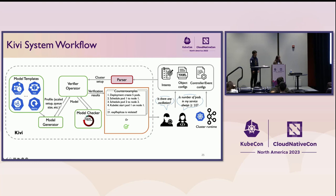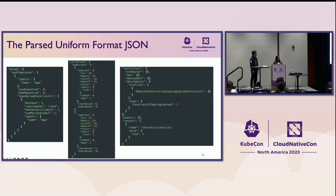Some brief notes about parsers. We parse the configuration into a uniform format — right now we chose JSON, but we can improve it to support YAML. The templates show node types similar to what Kanwuk showed, including controller configurations and intents. We have implemented some preliminary parsers for YAML files, but you can implement other parsers for Helm charts — pull requests are welcome. As long as the input can be parsed into the uniform format, our system can handle it.